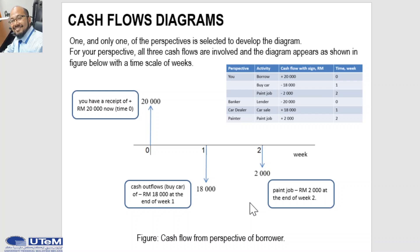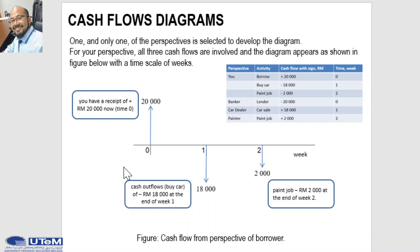This diagram shows how we develop a cash flow diagram based on the given information. In the cash flow diagram, we have a time scale of two weeks, cash inflow shown by an arrow pointing up — for example, the 20,000 — and cash outflow shown by a negative sign with arrows pointing down — 18,000 and 2,000.